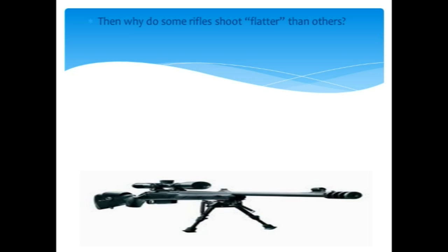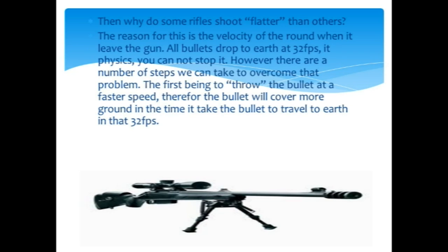So, if all bullets drop at 32 feet per second, why do some rifles shoot flatter than others? This is actually a pretty easy thing to figure out once you understand what's going on once the bullet leaves the barrel. The reason is velocity.